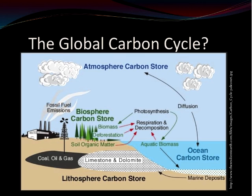Let's start by looking at a diagram that many of you have probably seen before, or at least a similar diagram. This diagram depicts some of the key features of the global carbon cycle. It shows the role of human activities in changing the global carbon cycle, and it divides the biosphere into two parts: a land mass and a marine or ocean environment. I put a question mark next to the title because there's an important element missing, and that's the role of inland waters.